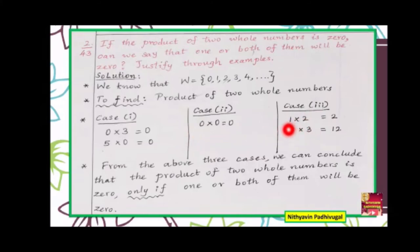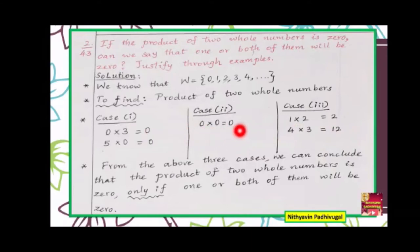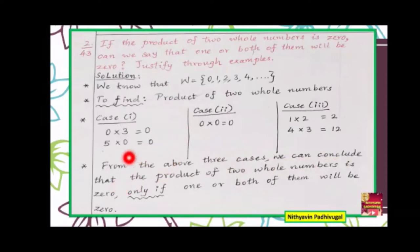In case 3, both numbers are not 0. I have chosen small numbers for convenience: 1 into 2 is 2, and 3 into 4 is 12. So if any one of the numbers equals 0, the result is 0. If both numbers are not 0, the result will not equal 0. From the above 3 cases, we conclude: if the product of 2 whole numbers is 0, then we can say that 1 or both of them will be 0.